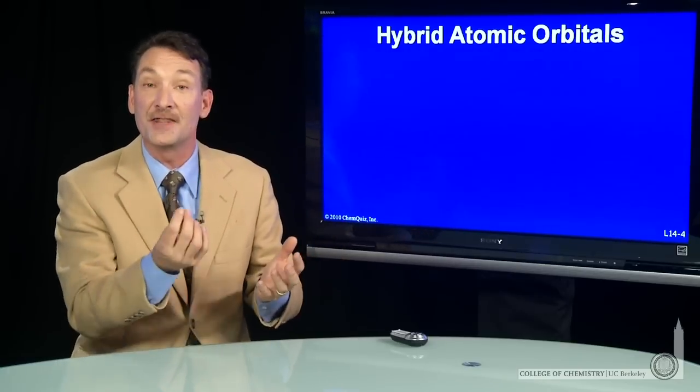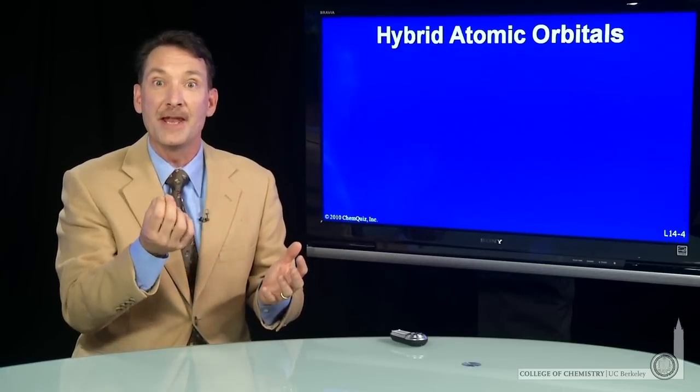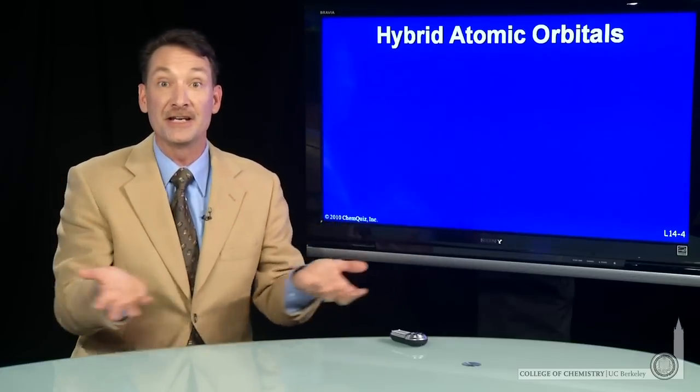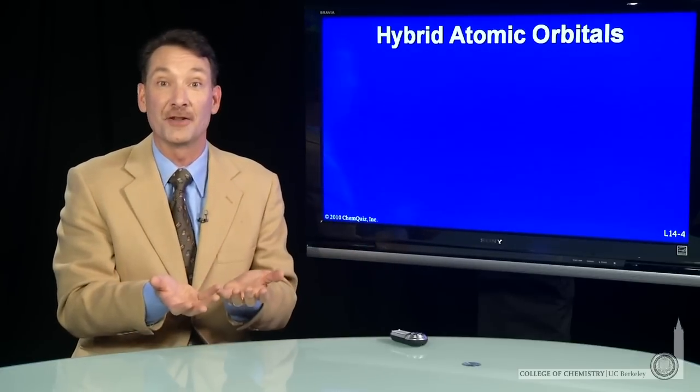make a linear combination of those on the single atom, and make a linear combination that's geometrically appropriate for 180 degrees—two orbitals 180 degrees from each other.